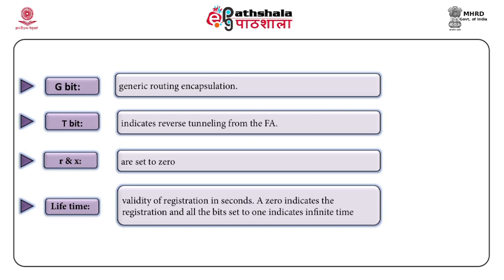The remaining fields include the source address, which is the mobile node's home address. The destination address is that of the foreign agent or home agent, depending on the type of care of address used. The care of address field contains the mobile node's care of address. Identification is an important parameter generated by the mobile node to uniquely identify a request. It is matched at the time of registration reply to protect against replay attacks.